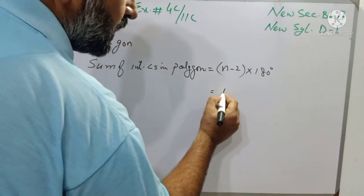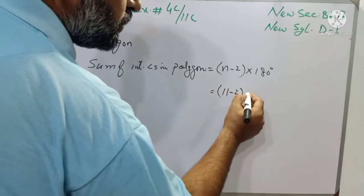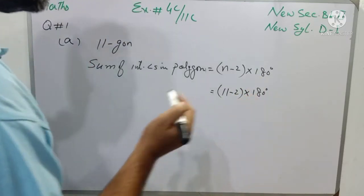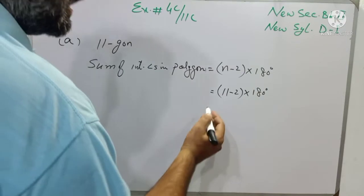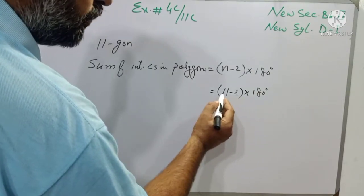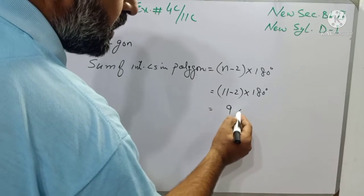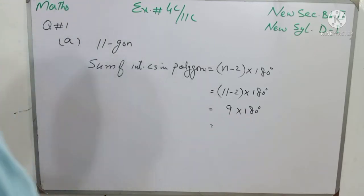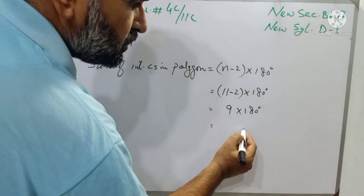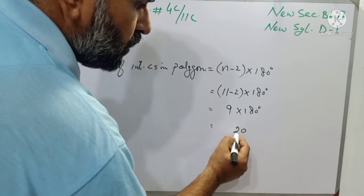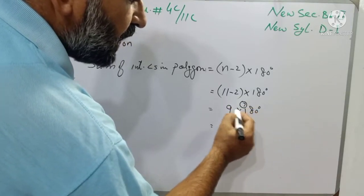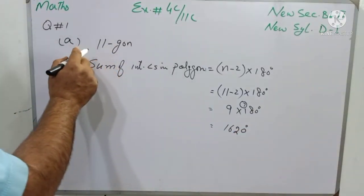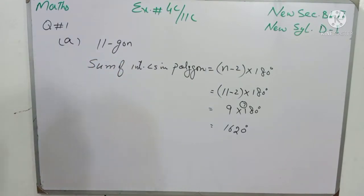It is written as 11 minus 2 into 180 degrees. We can also write 2 right angles here, as 2 right angles means 180 degrees. When we subtract 2 from 11 we get 9, multiplied by 180 degrees. 9 multiplied by 180: 9 times 0 is 0, 9 eights are 72, carry 7, 9 ones are 9 and 7 makes 16. So the sum of interior angles in the 11-gon is 1620 degrees.